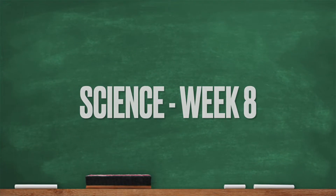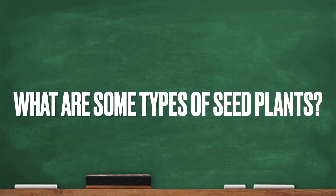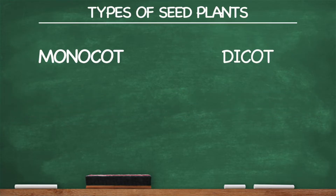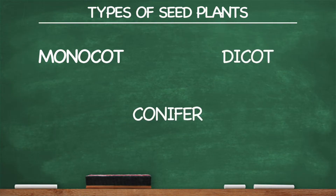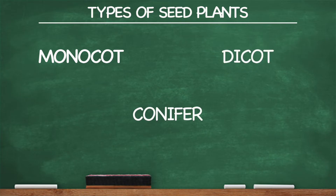Hey everybody, welcome back to science. Let me ask you a question — what are some types of seed plants? Monocot, dicot, conifer! There are only three, which makes this pretty easy. Plus they're cool words to say — who doesn't love to say 'conifer'?